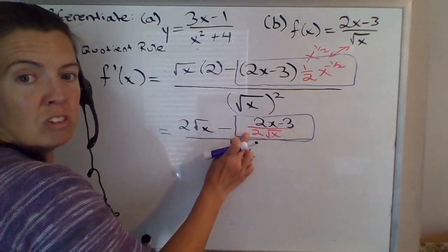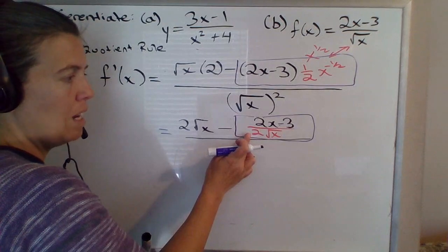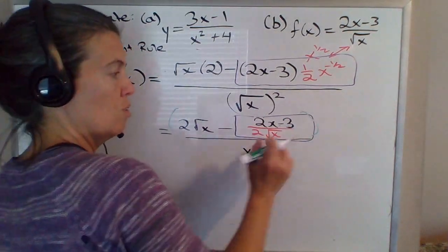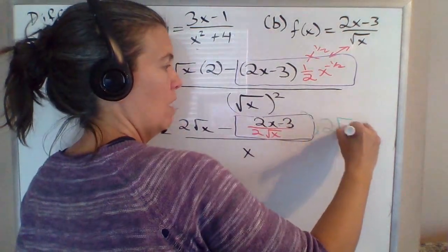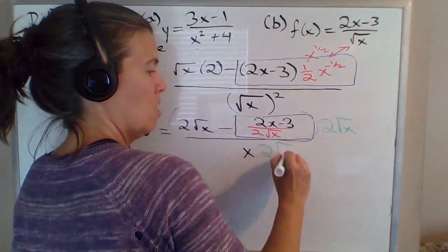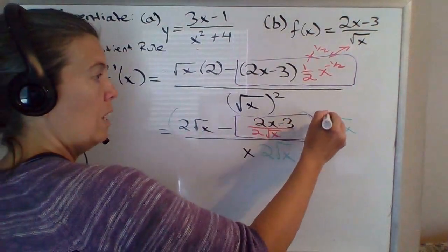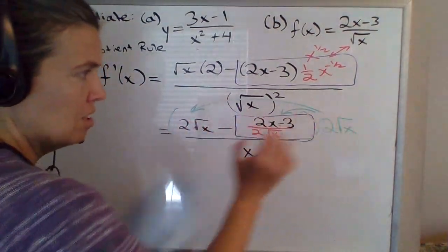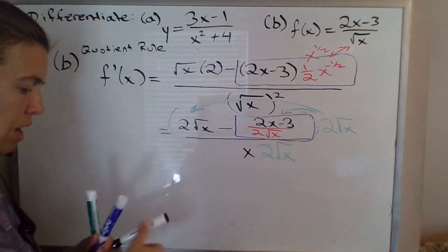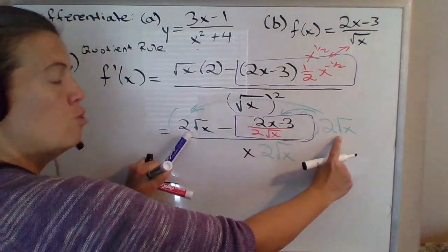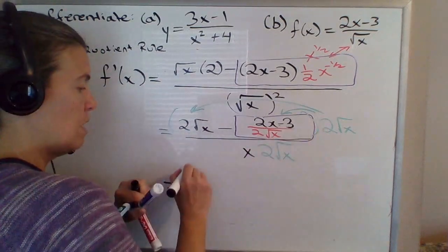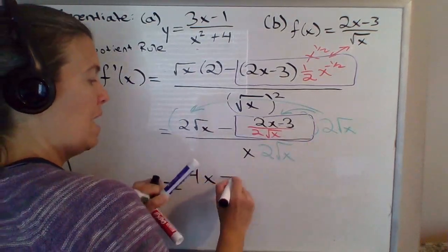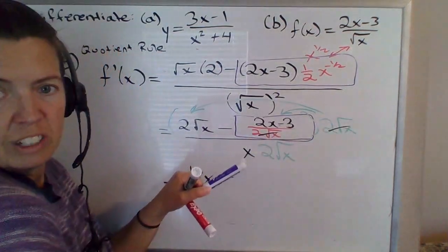What we can do is cancel this denominator right here by multiplying the numerator and denominator by whatever we're trying to get rid of. In this case, 2 square root of x — I'm going to multiply that on the top and bottom. In the numerator, I'm going to distribute it to both parts of that difference. So when you do 2 square root of x times 2 square root of x, you multiply 2 times 2 to get 4, and square root of x times square root of x gives just x. Those 2 square root of x's just cancel.